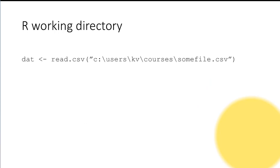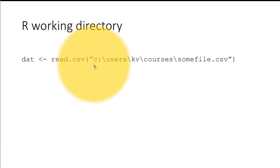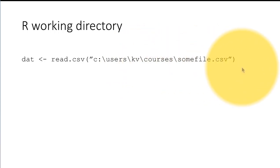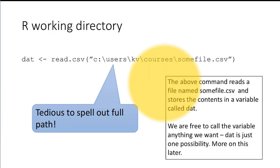One thing we could do is be very explicit about where R is supposed to look for this file. For example, on Windows, we could say read.csv and then specify the complete path to the file — within the C drive, within the users directory, within the kv directory, within the courses directory, there is a file called some_file.csv — read that file. So here we are telling the system exactly how to find the file. But it's extremely tedious to have to spell this out every time. The above command reads a file and stores the result in a variable called dat.